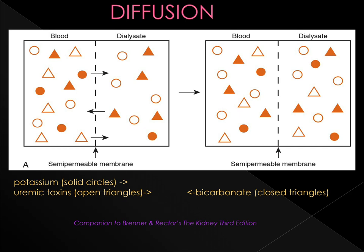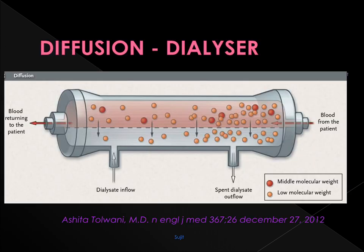Solutes with higher concentration in the blood compartment — such as potassium shown in solid circles and uremic toxins shown in open triangles — diffuse through the membrane into the dialysate compartment. Conversely, solutes with higher concentration in the dialysate — such as bicarbonate represented by closed triangles — diffuse into the blood compartment. Solutes such as sodium and chloride with nearly equivalent concentrations in both compartments move little across the membrane. Solutes move from the side of higher concentration to the side of lower concentration, from blood to the dialysate. Diffusion is best for clearing low molecular weight substances such as urea and creatinine.